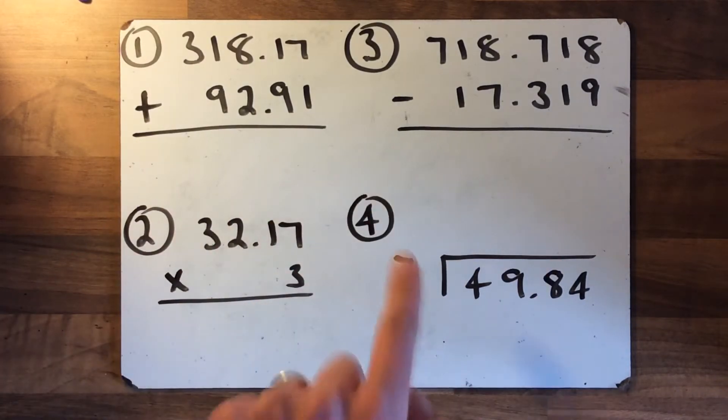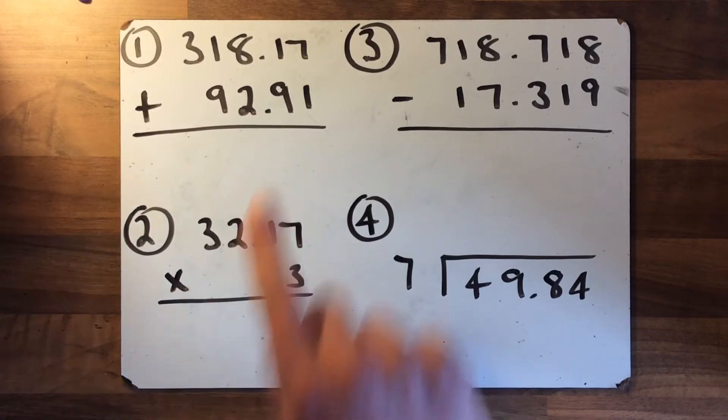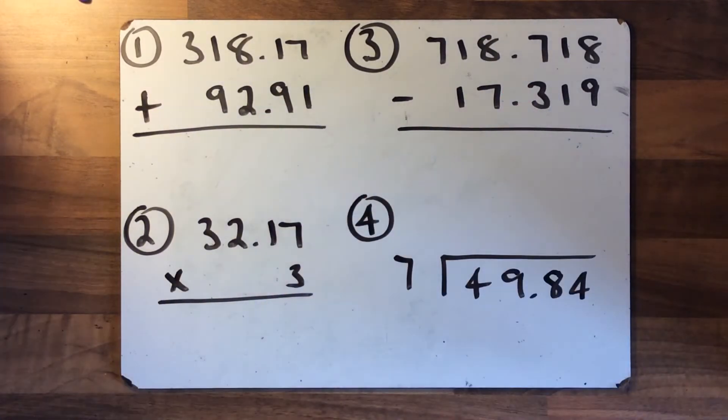subtraction, multiplication and division. You can notice there is a decimal point in all of these and I've been very nice—I've actually lined up the decimal point for you here, and you'll need to do the same with your multiplication and your division as well.